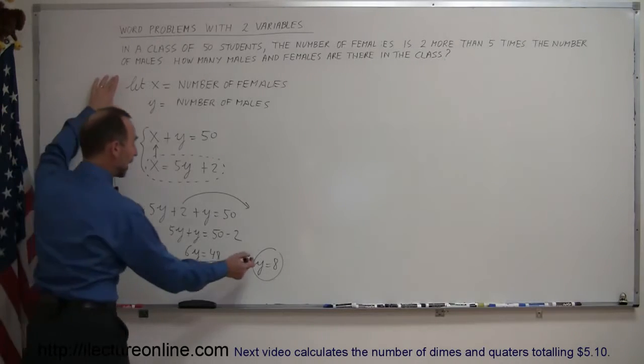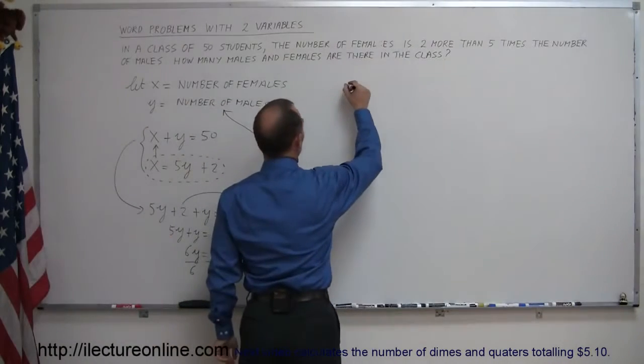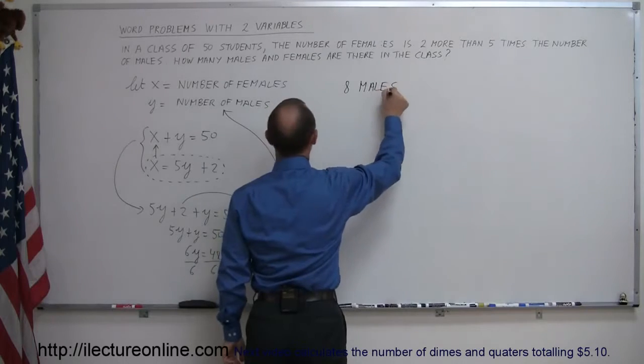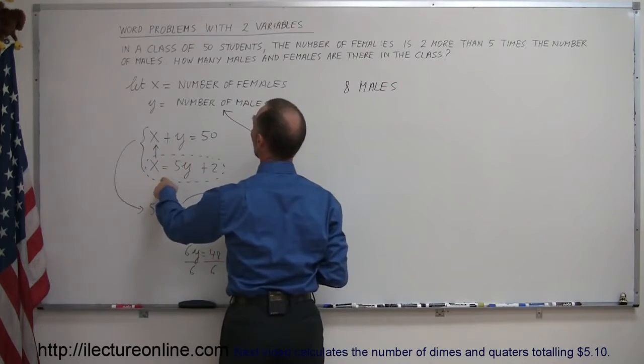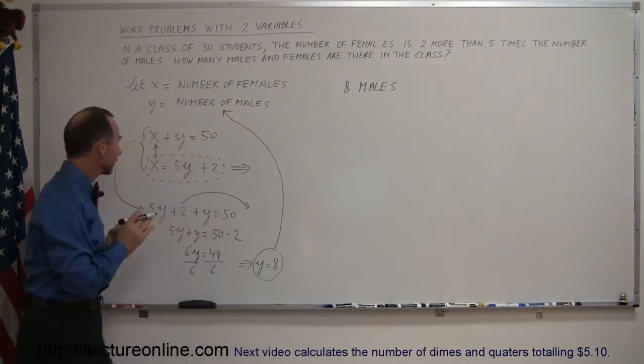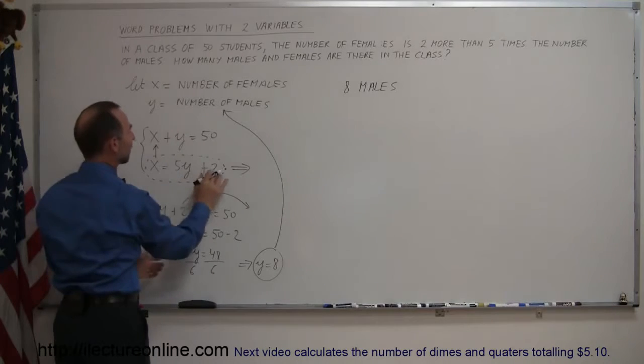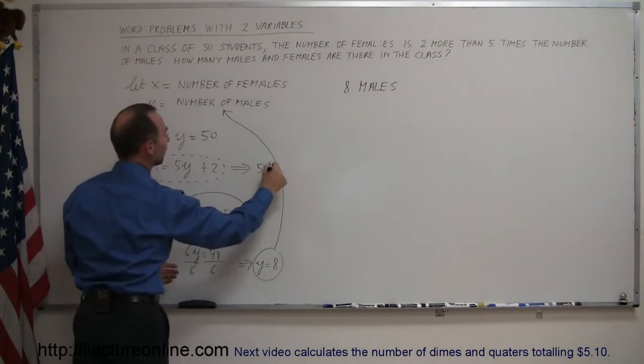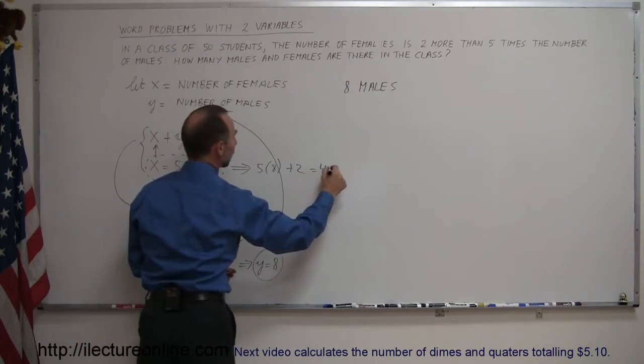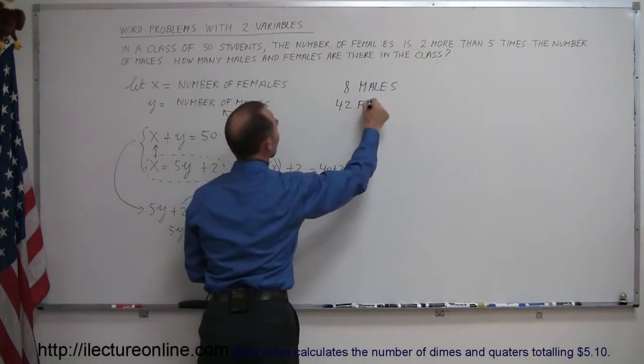So now what does y represent? Again, if you have a very good definition, you can go back and say y represents the number of males, so you can say there are eight males in the class. And then you go back to this equation right here. The number of females, so x represents the number of females, is equal to five times y, which is the number of males, so five times eight plus two. Five times eight is forty, that's forty plus two, which is forty-two. So therefore there are forty-two females in that class.